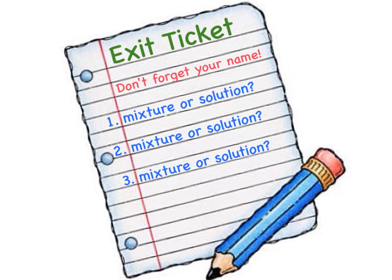It's time for our exit ticket. Get a small piece of paper and put your first and last name at the top. On the left side, write number one, then below that number two, and then below that number three. Your answer for all three is either going to be the word 'mixture' or the word 'solution.' A solution is always a mixture, but mixtures are not always solutions — you need to figure out which one it is.